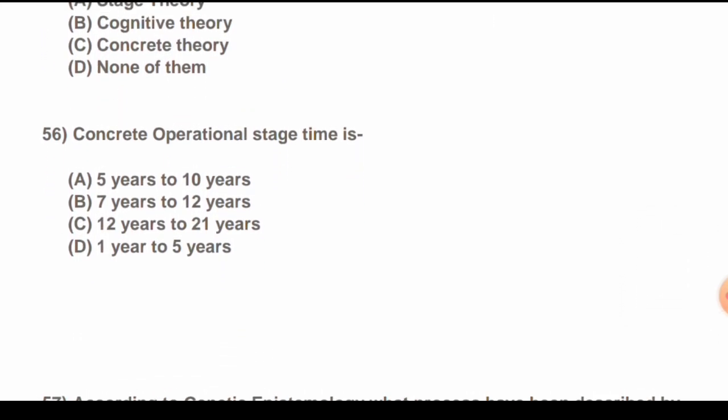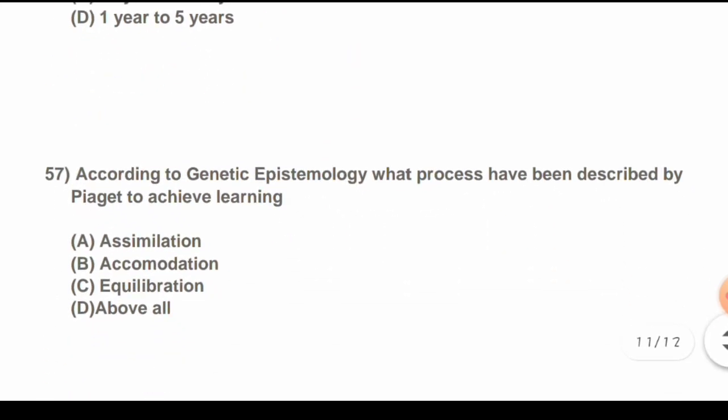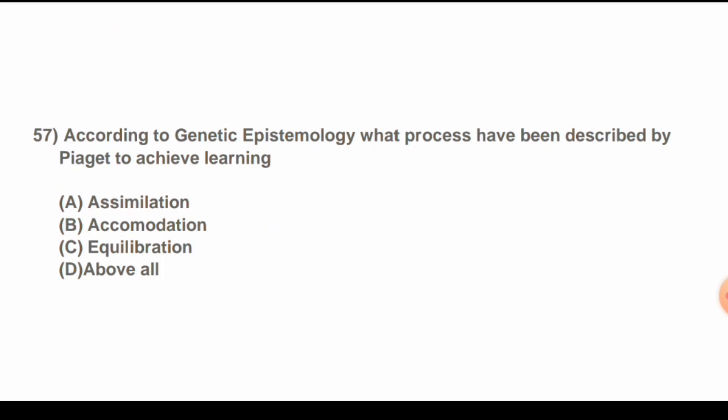Question 55: Concrete operational stage time is: Options are: A) Five years to ten years, B) Seven years to 12 years, C) 12 years to 21 years, D) One year to five years. The correct answer is D) All of the above.